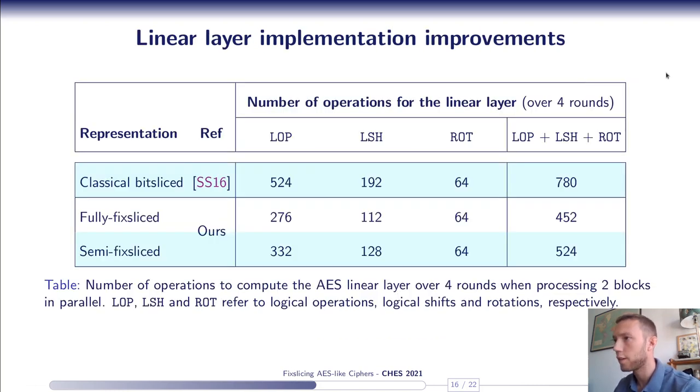And, this table summarizes the number of operations required for the linear layer over four rounds. And we tried to distinguish the logical operations from the logical shifts and rotations, because, as I mentioned, those can be computed for free on ARM, for instance, thanks to the barrel shifter. So, on ARM, this is the operations that really matter. And, for the fully fixsliced implementation, we see that we have almost a factor of two between the number of operations. So, that's a significant improvement. Obviously, it's a little bit less efficient in the semi-fixsliced since it's a trade-off between code size and efficiency.